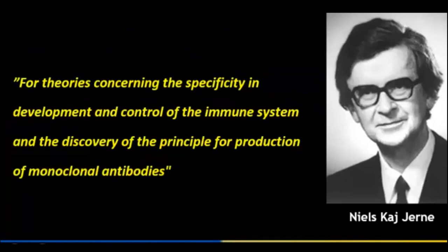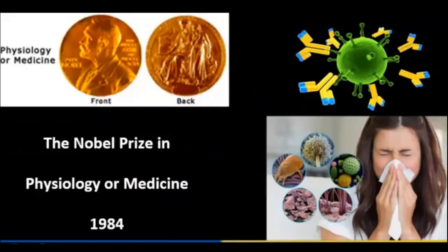There is a Niels-Jerne theory concerning the specificity in development and control of the immune system, and the discovery of the principle of production of clonal antibodies. This research on immunity led to the Nobel Prize in Physiology or Medicine in 1984.